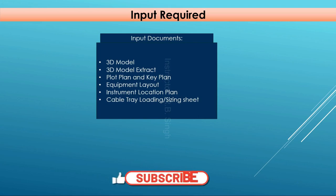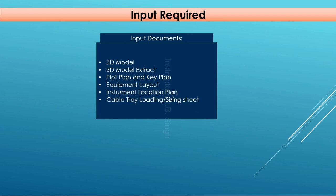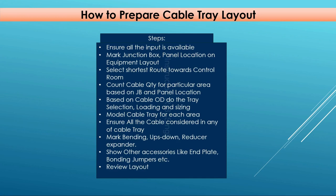By this way we can prepare the cable tray layout in AutoCAD. But if you have a 3D model and have already modeled the cable tray in 3D, this manual workout is not needed — you can just extract the 3D model and the layout will show there. You just need to mark the cable tray number and root number, prepare the legend sheet, and show the key plan, and your layout is ready. Otherwise, the manual process using the instrument location plan must be followed. By both ways you can prepare the main cable tray layout.